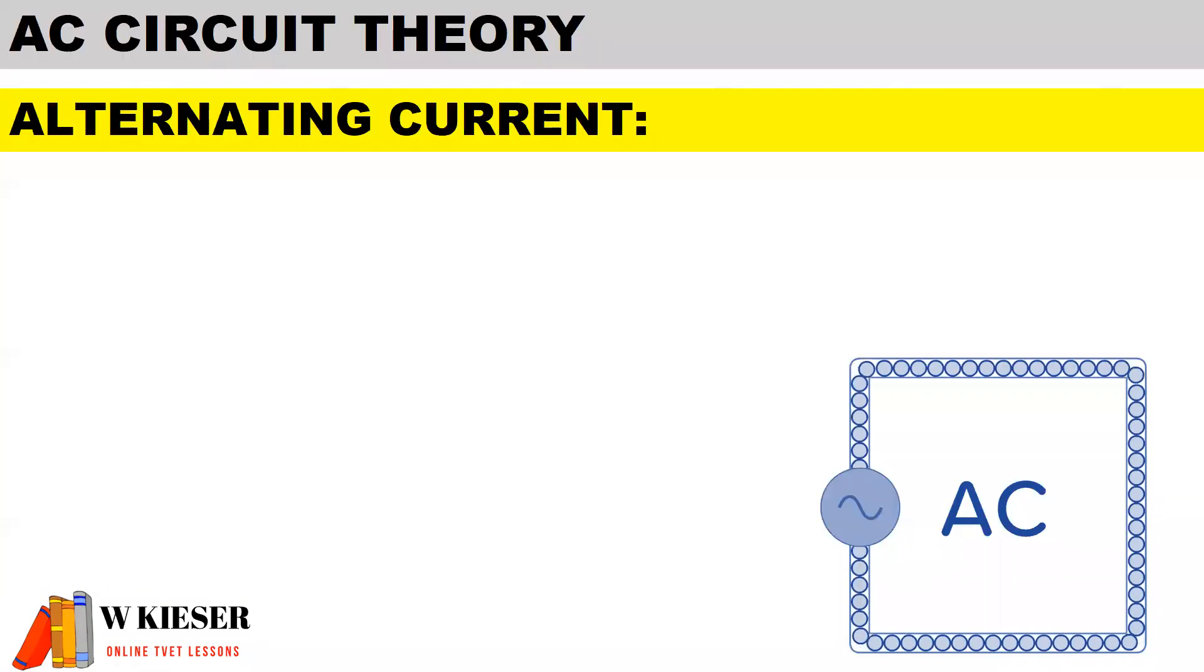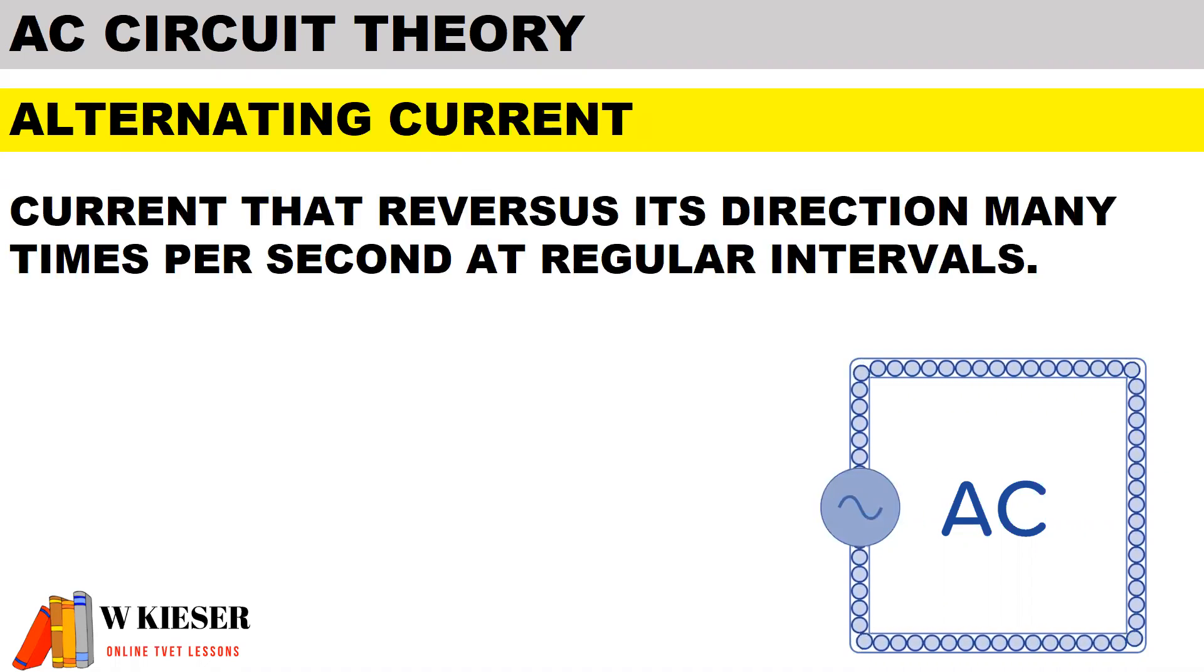On AC circuit theory there are a few definitions that we need to know for alternating current. It is current that reverses its direction many times per second at regular intervals.